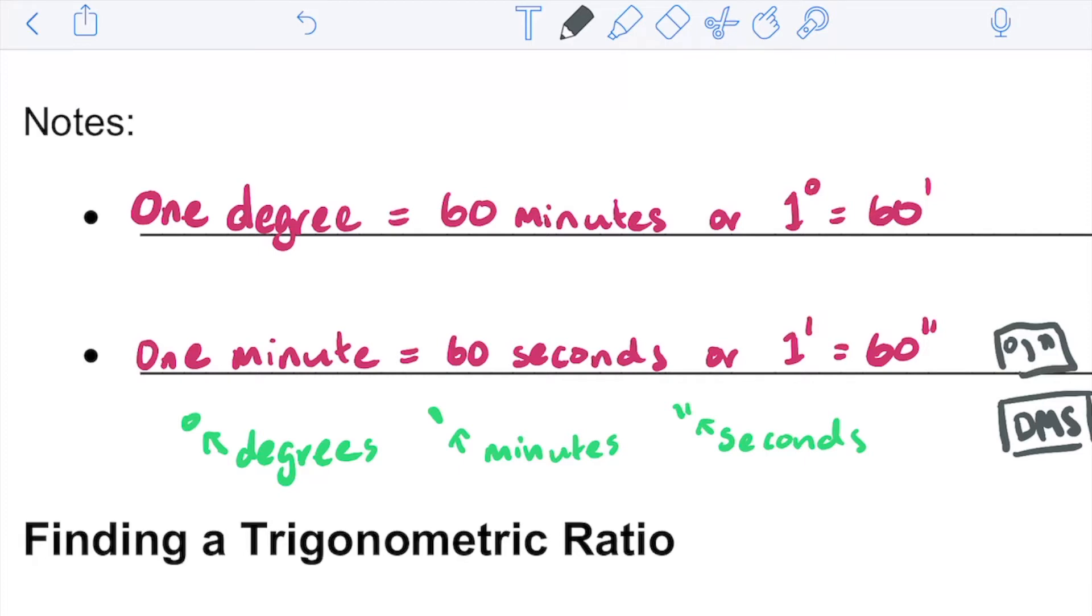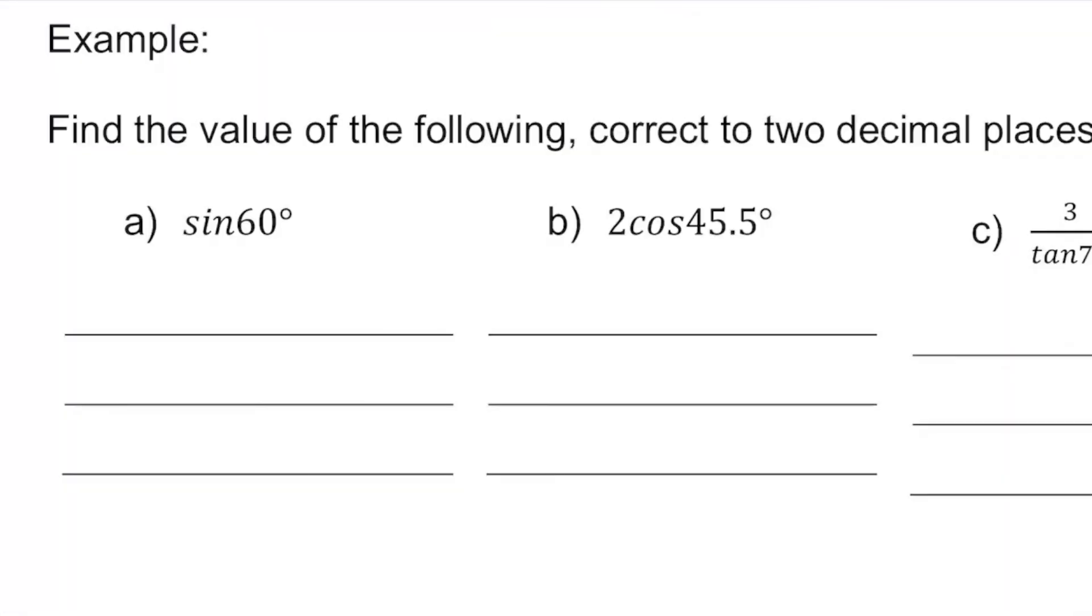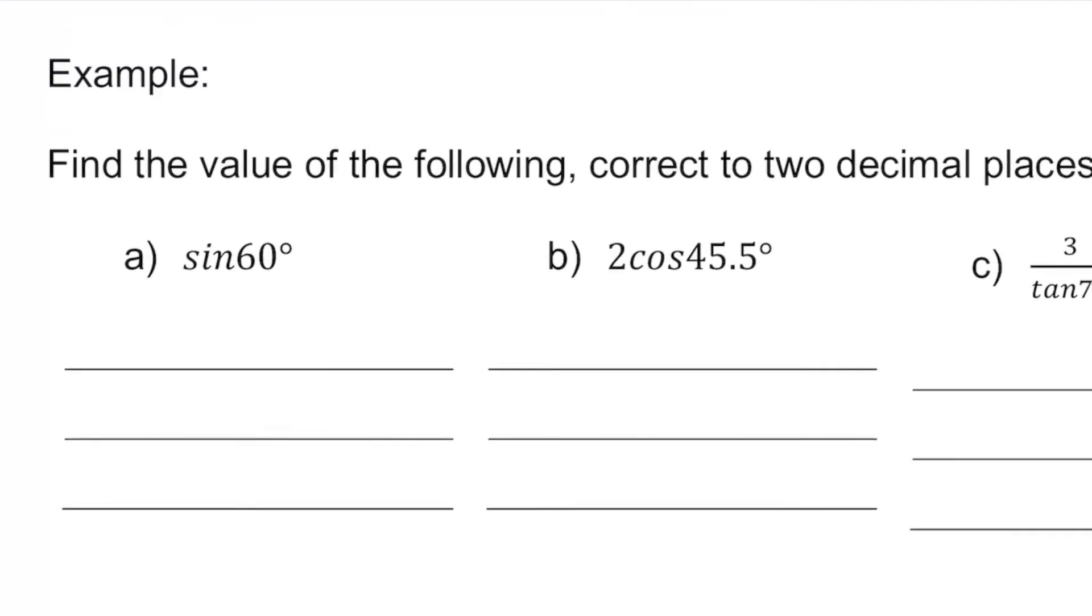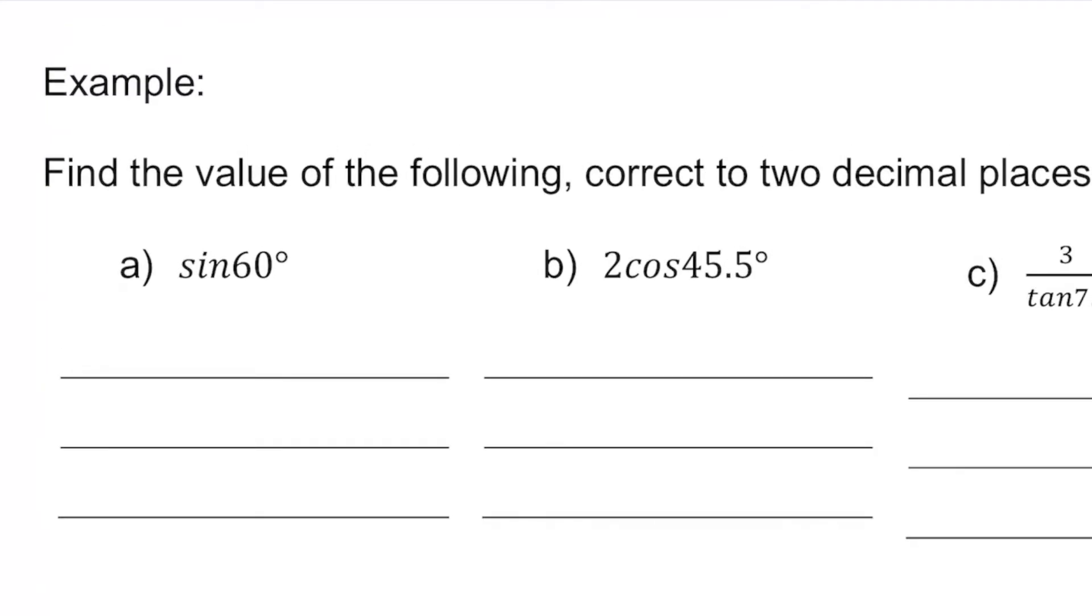Let's get started on some examples. We have four examples here. One of the extra bits is we have three other buttons that we need to use: the sine button, the cosine button, and the tangent button. These are the buttons we are going to use to actually find the values of these particular trig ratios.